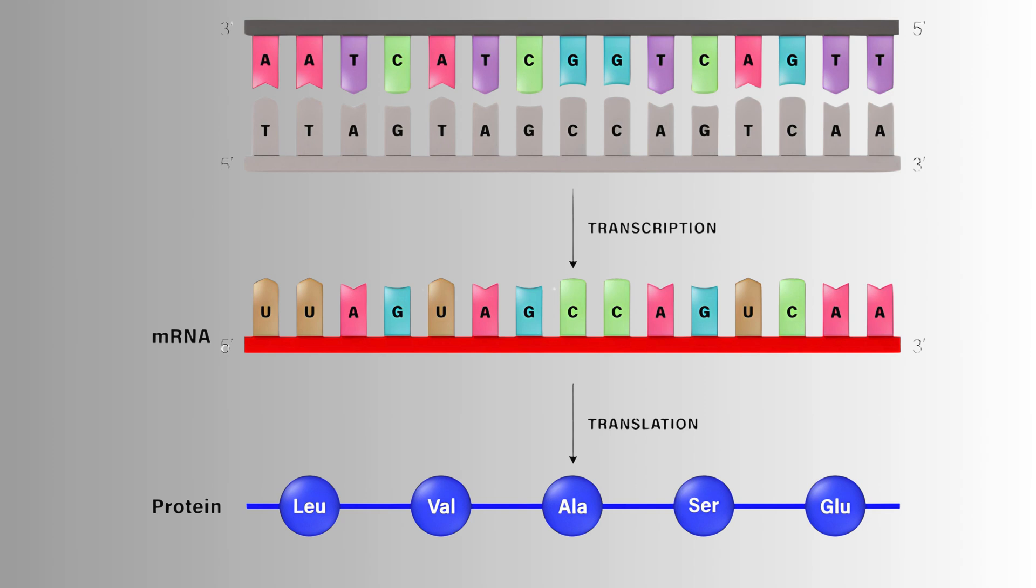In order for the information in DNA to be utilized, it must undergo two key processes. The first is transcription, during which DNA is copied into messenger RNA (mRNA) in the cell nucleus. This molecule then carries the information from the nucleus to the ribosomes. The second process is translation, where this information is decoded into a sequence of amino acids, resulting in the formation of a functional protein.